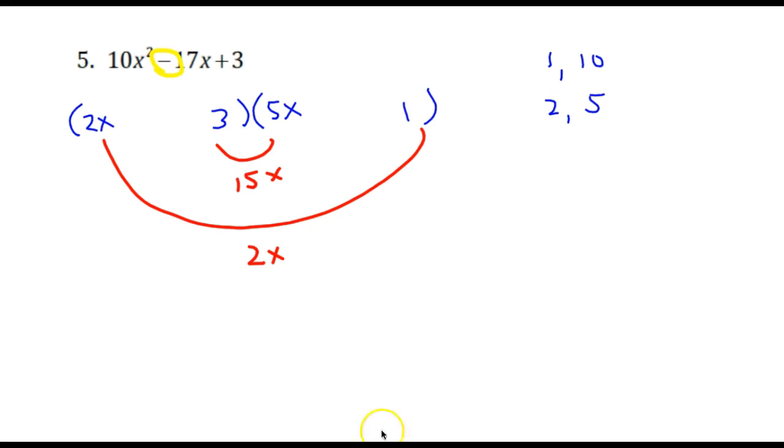So if this was a minus here and this was a minus, that would be perfect because then we'd have negative 15x and negative 2x which would sum to negative 17x. And notice this will work because a negative 3 times a negative 1 would give us a positive 3.